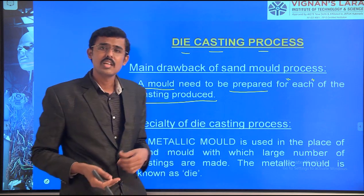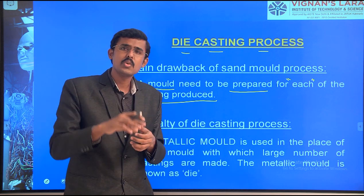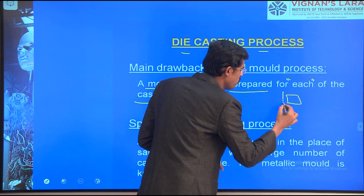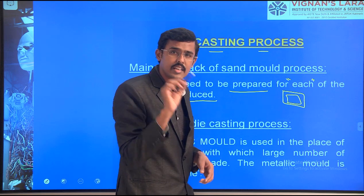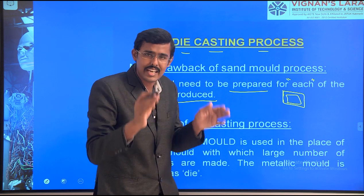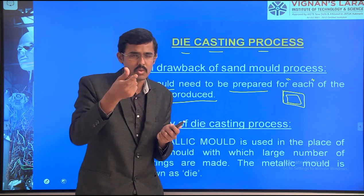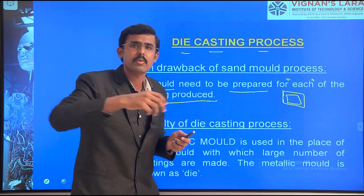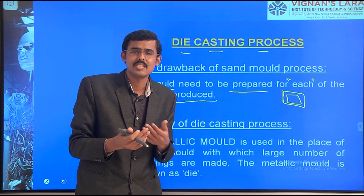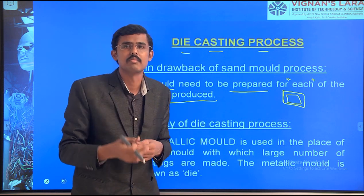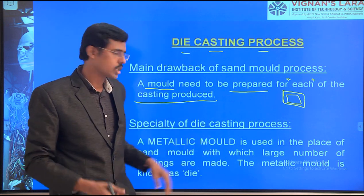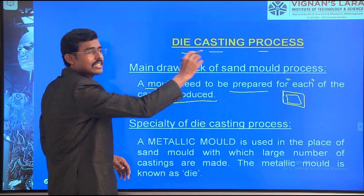In the sand molding process, the texture of the product is affected. The sand grains create small grain marks on the mold surface, so the sand mold casting texture falls on the product also — it is not a smooth surface. Considering these things, we move to the next category: the die casting process.